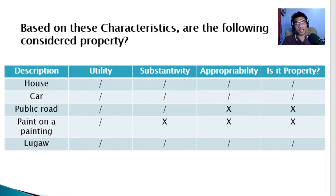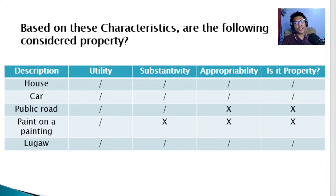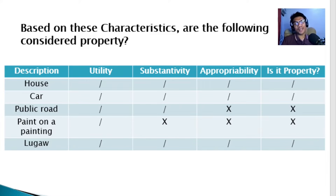Based on these characteristics, let's evaluate what is considered property. A house meets utility because it serves as shelter. It meets substantivity because it can be independent of other houses. And it meets appropriability because it can be owned, leased, or mortgaged. Since all three requisites are met, a house is definitely property. A car is similar — movable rather than immovable — but it serves transportation or mobility, can be segregated from its class, and can be sold, leased, or mortgaged. So a car is also property.